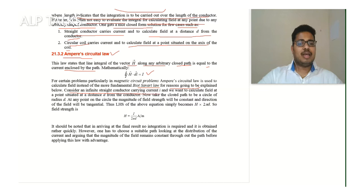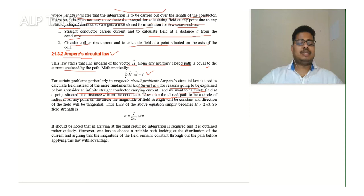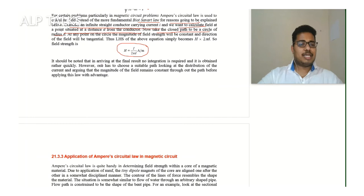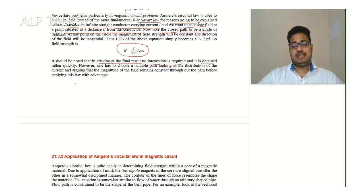Consider an infinite straight conductor carrying current I. We want to calculate field at a point situated at a distance d from the conductor. Take the closed path to be a circle of radius d. At any point on the circle, magnetic field strength will be constant and direction will be tangential. The left-hand side simply becomes H × 2πd. So field strength H = I / 2πd ampere per meter. No integration is required — it is obtained quickly. However, one must choose a suitable path such that the magnetic field magnitude remains constant throughout the chosen path before applying this law with advantage.